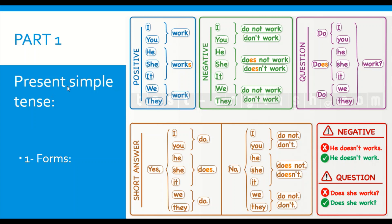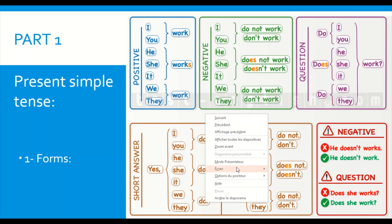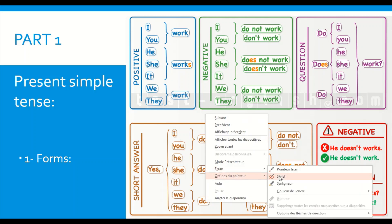First off, we start with the present simple tense. This time as well, we are going to go through the three different forms within this tense. We have the positive, or what we call the affirmative form, we have the negative form, and we have the question form, or what we call the interrogative form.